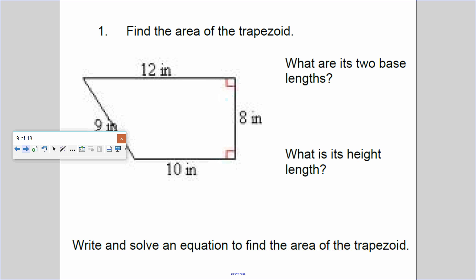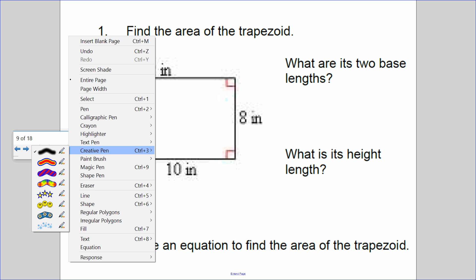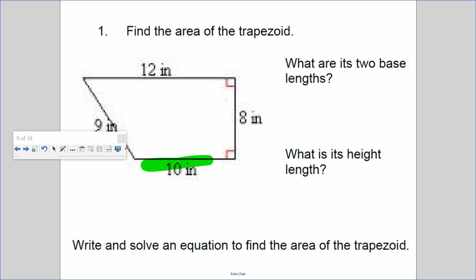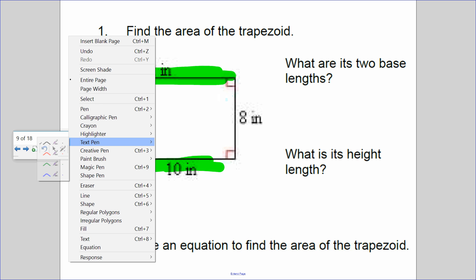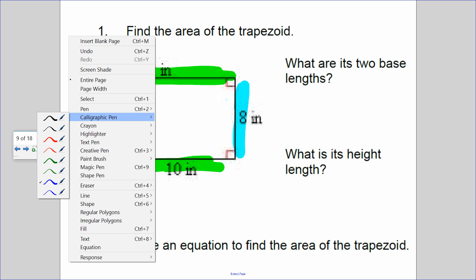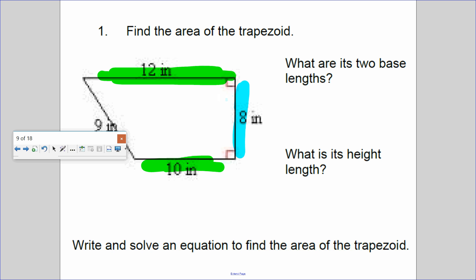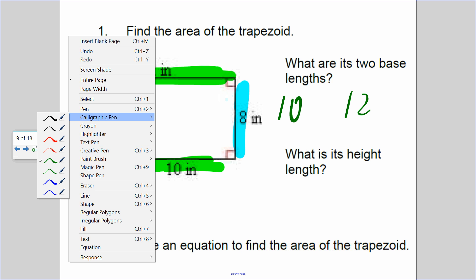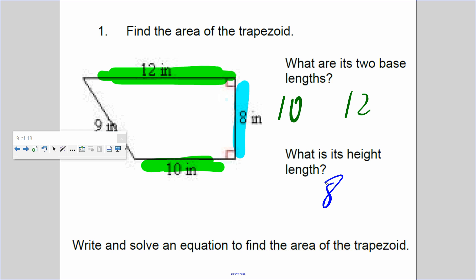Number one. Let me use my pen, let me highlight. What are the two bases? Well, this is a base. If we turn the polygon upside down, that would be the other base. What is the height of this? Again, height is standing straight up.